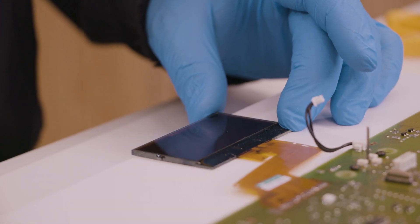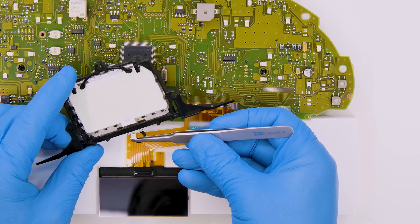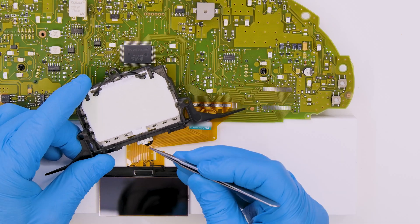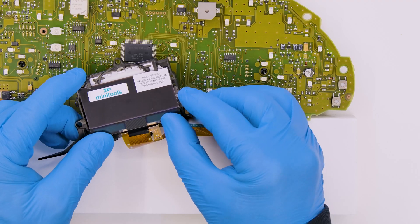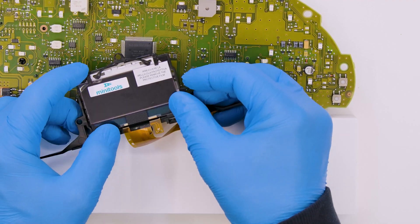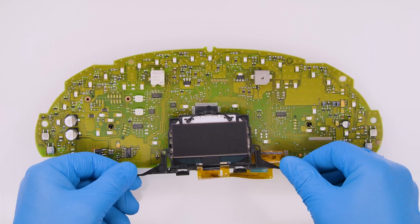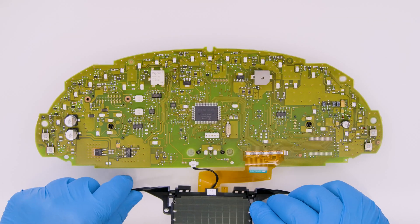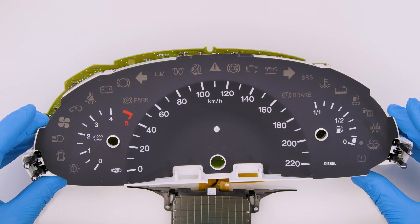Pull off the rear protective film from the display. Reconnect the connector to the plastic base. Fit the LCD and remove the front film as well. Secure the base with the overlay to the board.